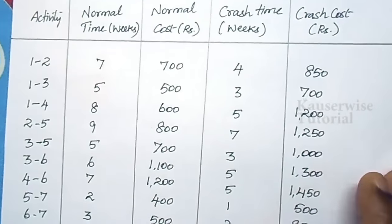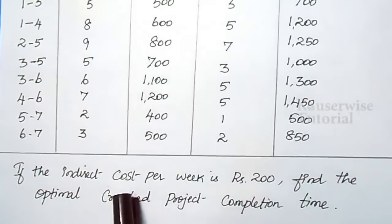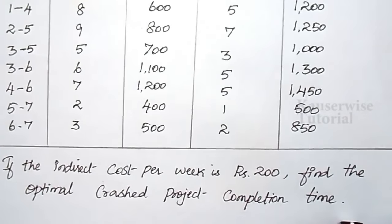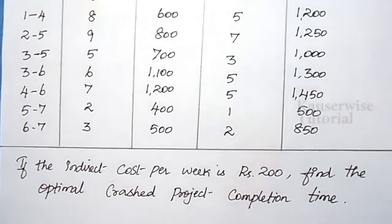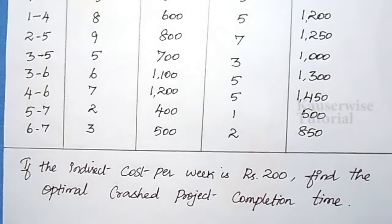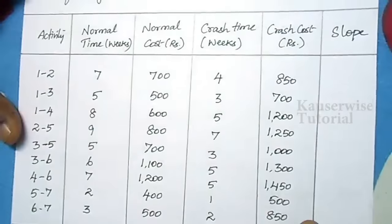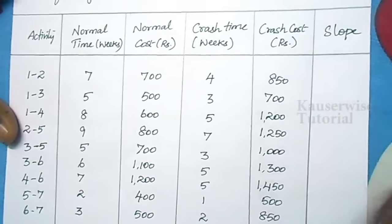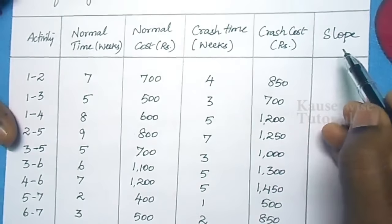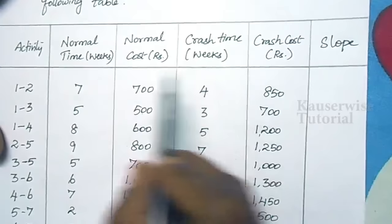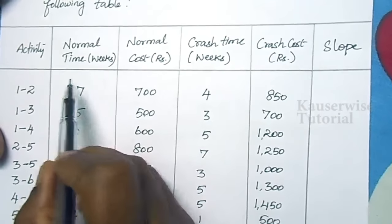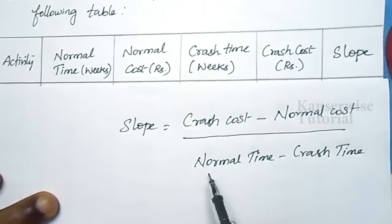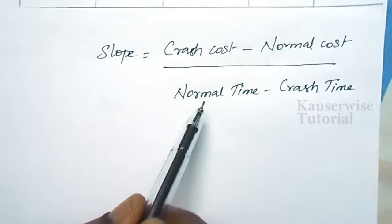If the indirect cost per week is 200 rupees, find the optimal crashed project completion time. Before drawing the network diagram, you need to find the slope for all activities. The formula is: slope = (crash cost minus normal cost) divided by (normal time minus crash time).